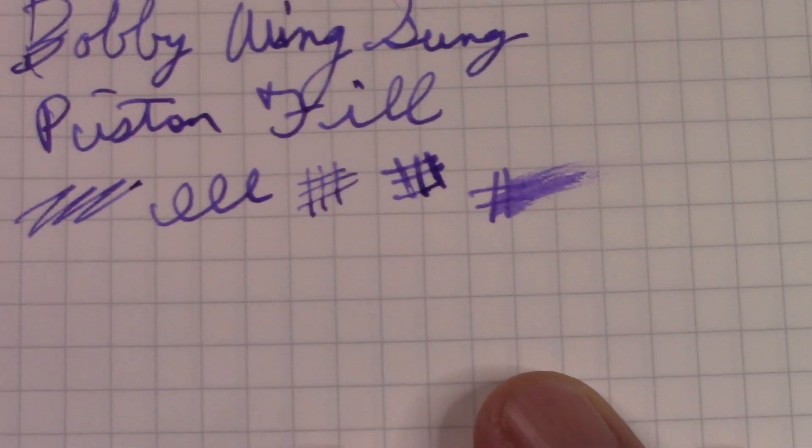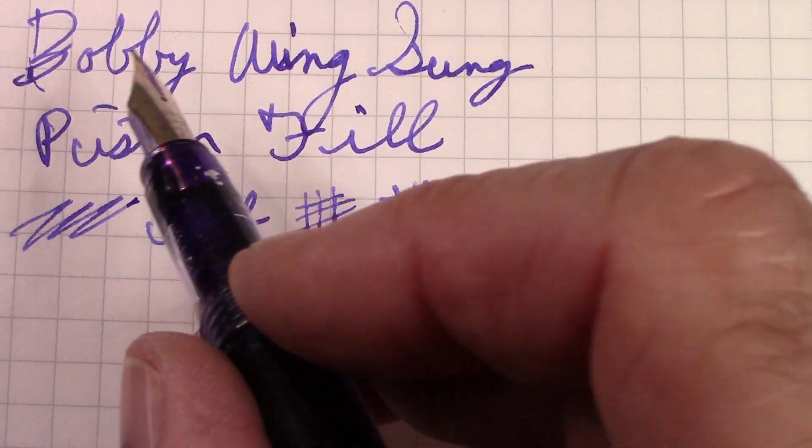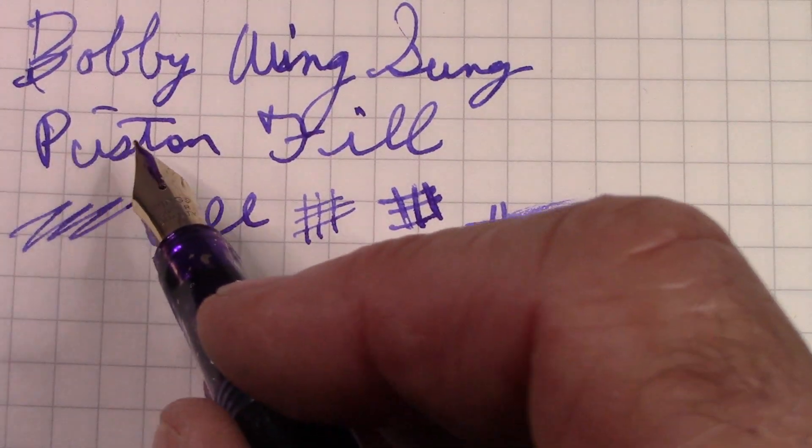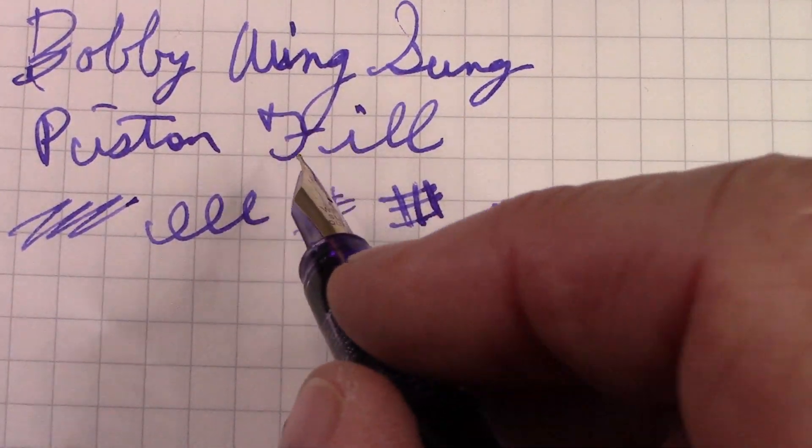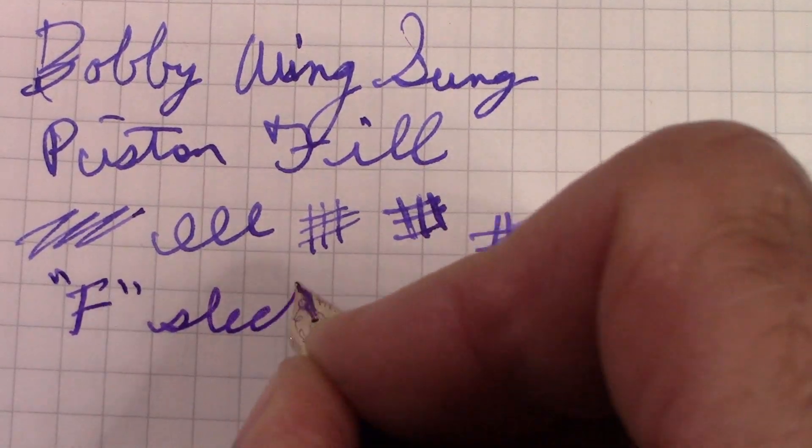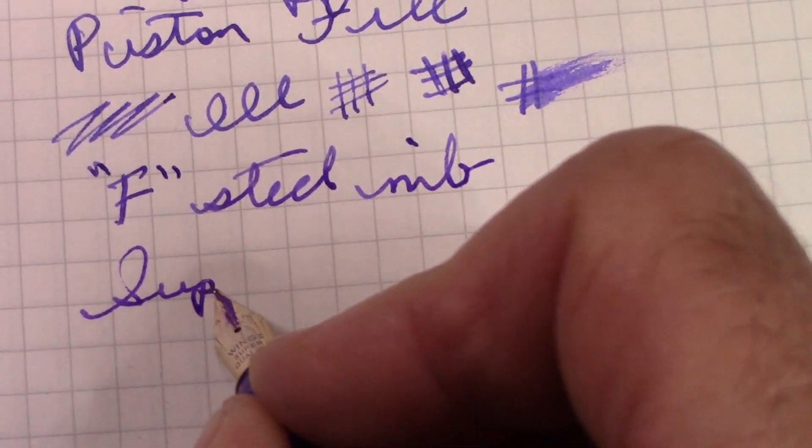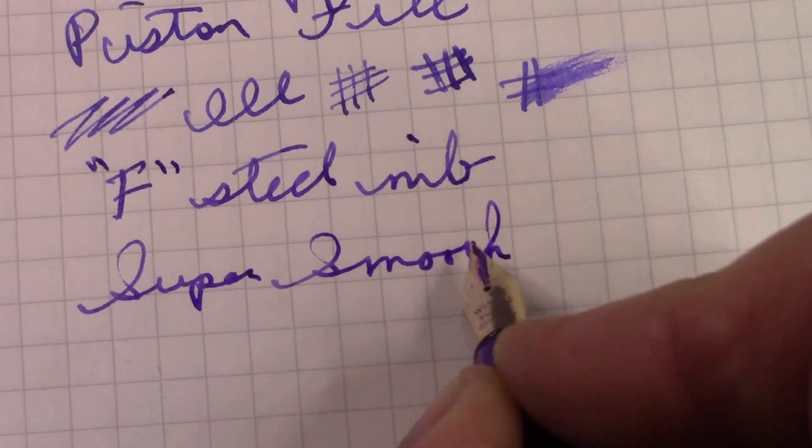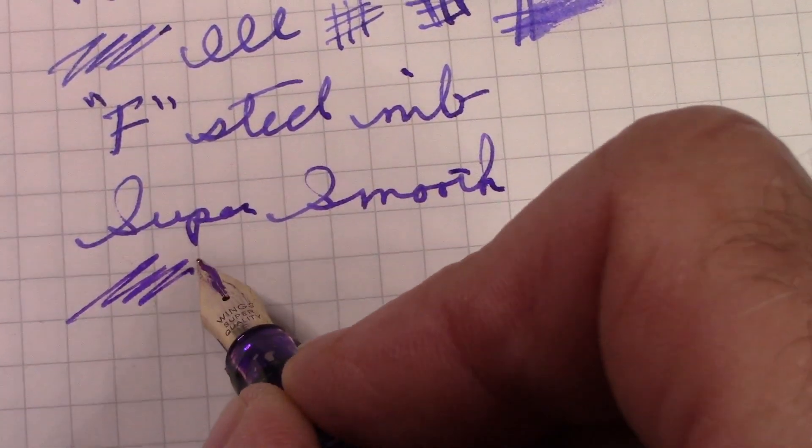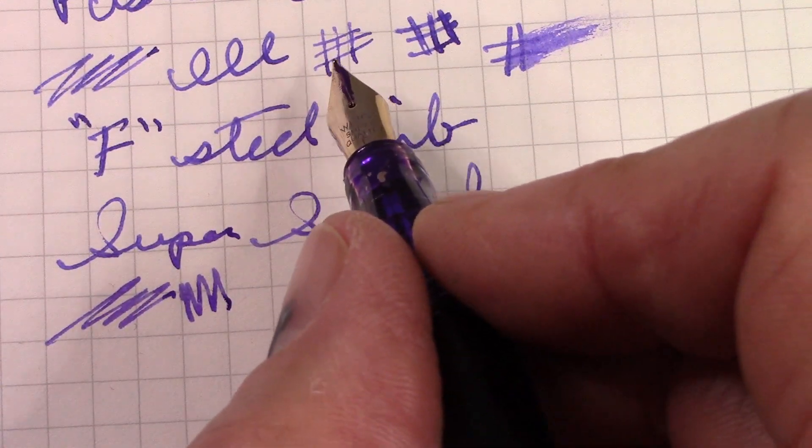I think you noticed a few things in this writing sample. One, it's been uncapped for a while so you got a little hard start there in the beginning. I'm bad at spelling. There's a little skip there because we got the ink flowing. It writes well for a fine steel nib. I mean it is super smooth. I would be happy with this nib as is, and I'm not a fine or extra fine guy.